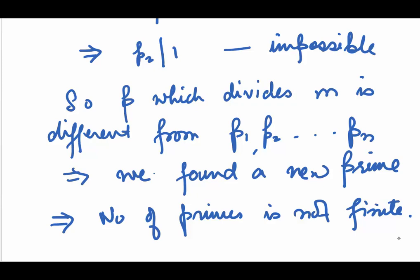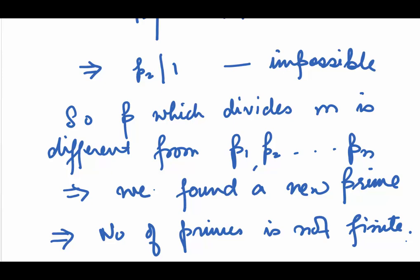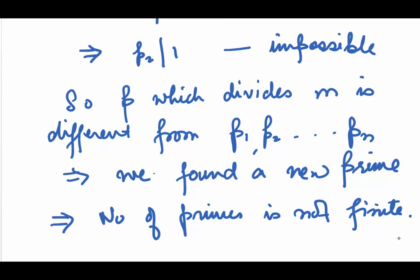So, this shows that we have again found a new prime. Our number of primes is not finite. We don't have only p1, p2, ... pn, n primes. We have found a new prime in both the cases. So, we have contradicted that the number of primes is finite and we say the number of primes is infinite.